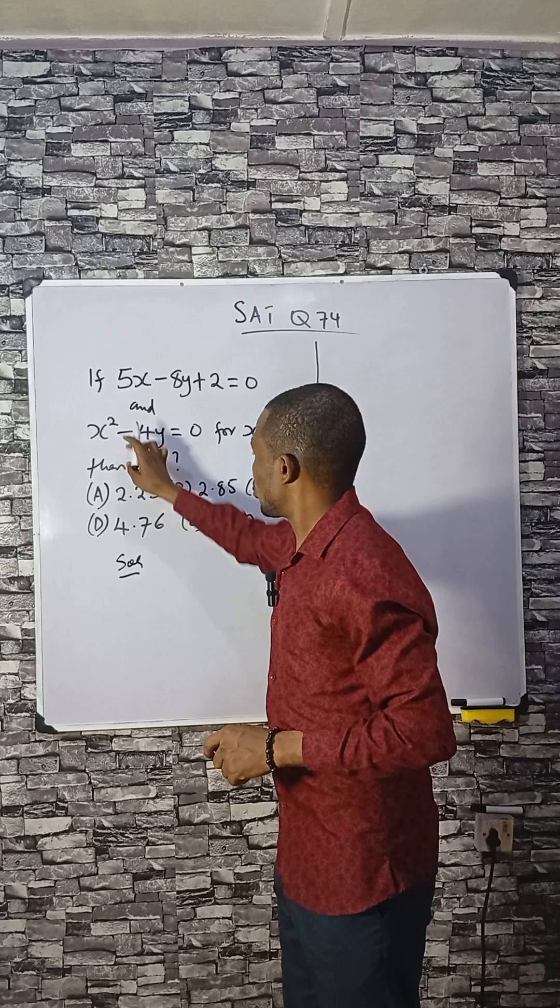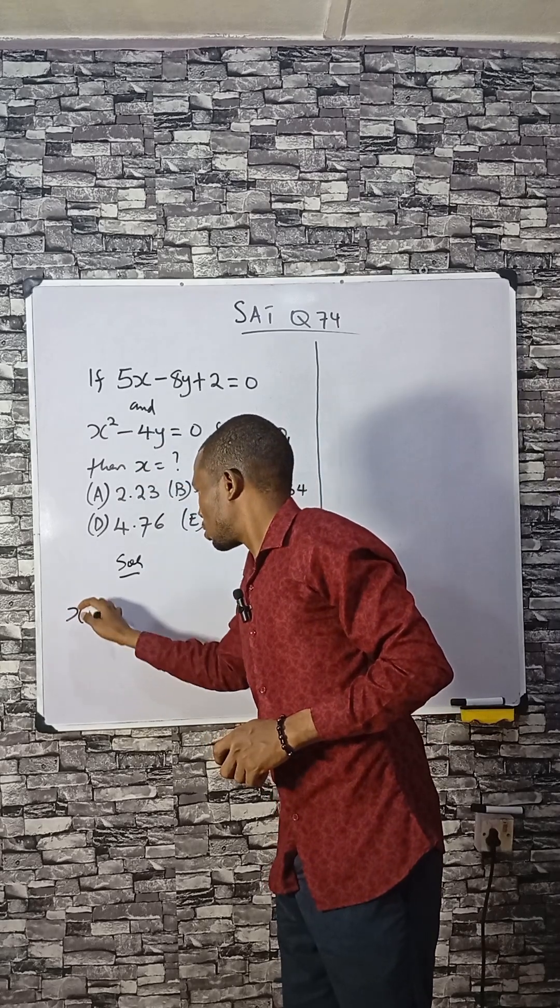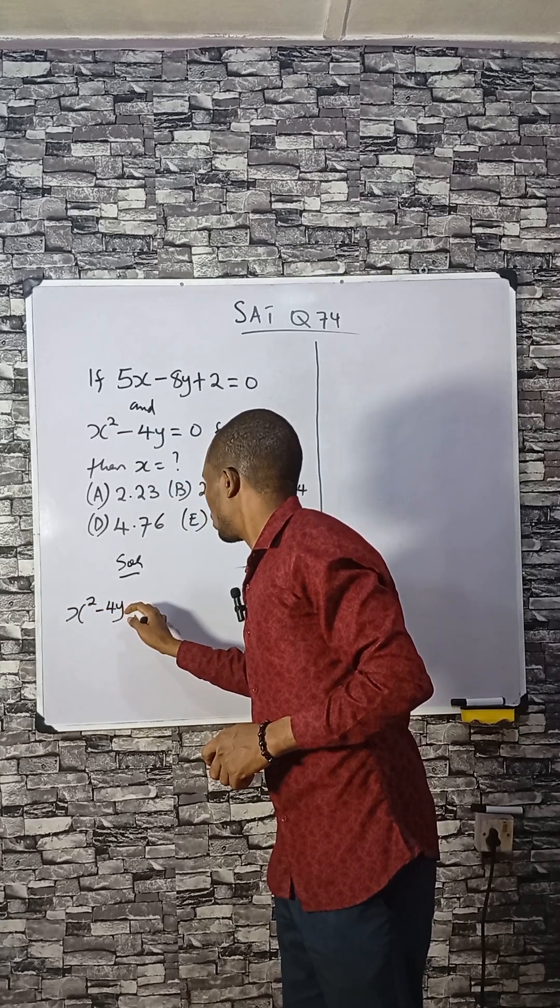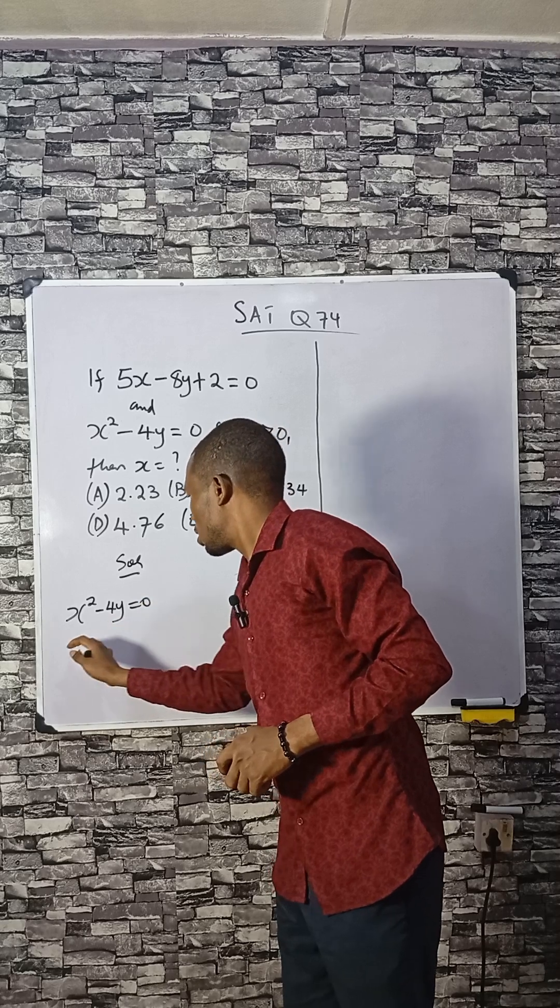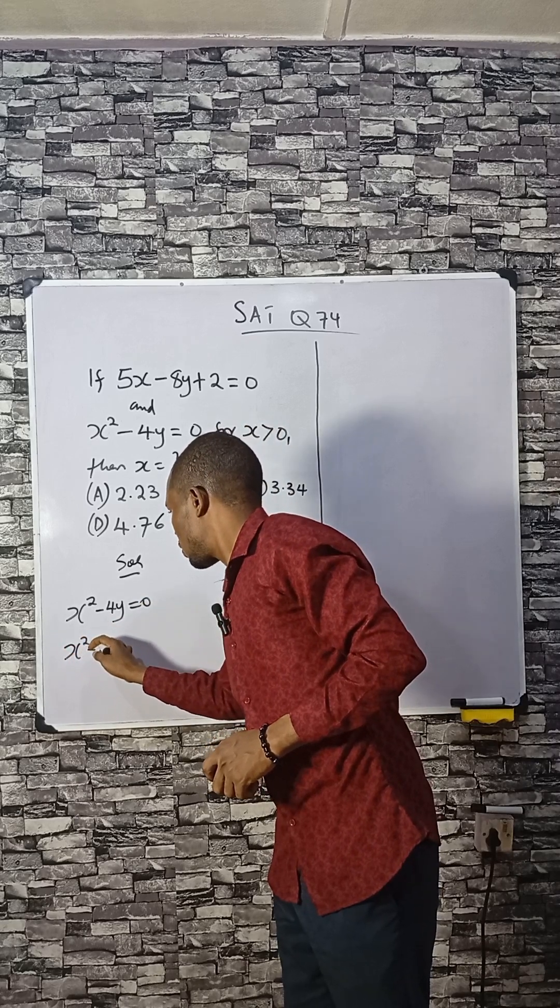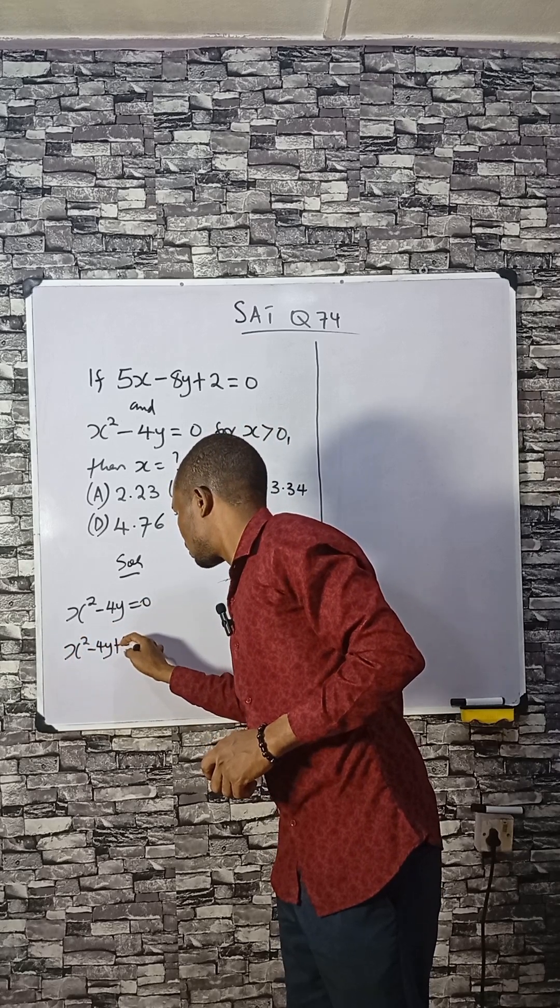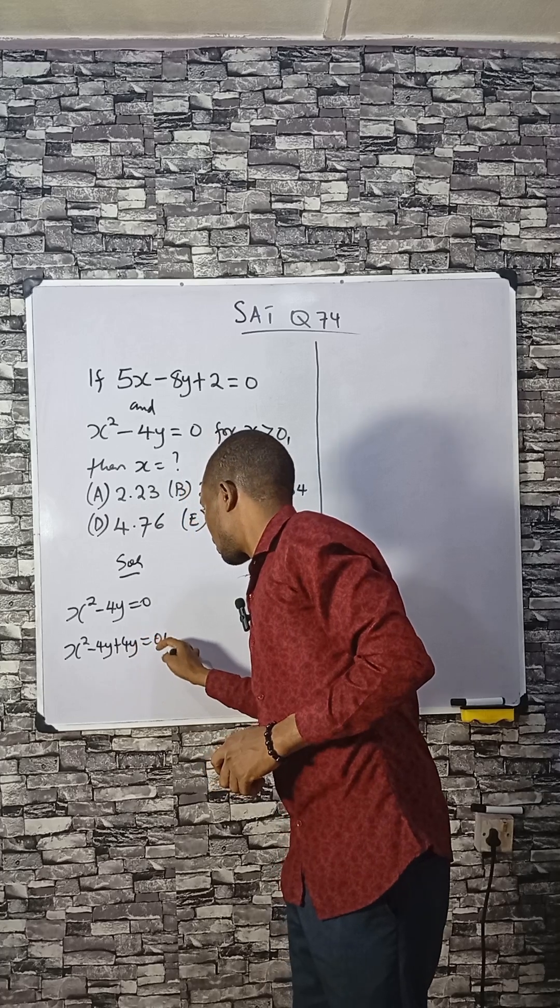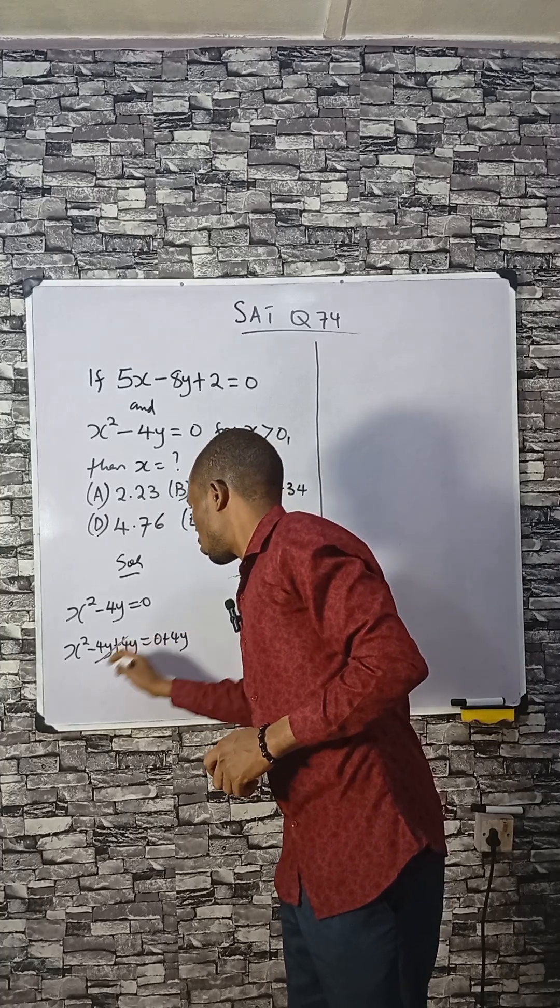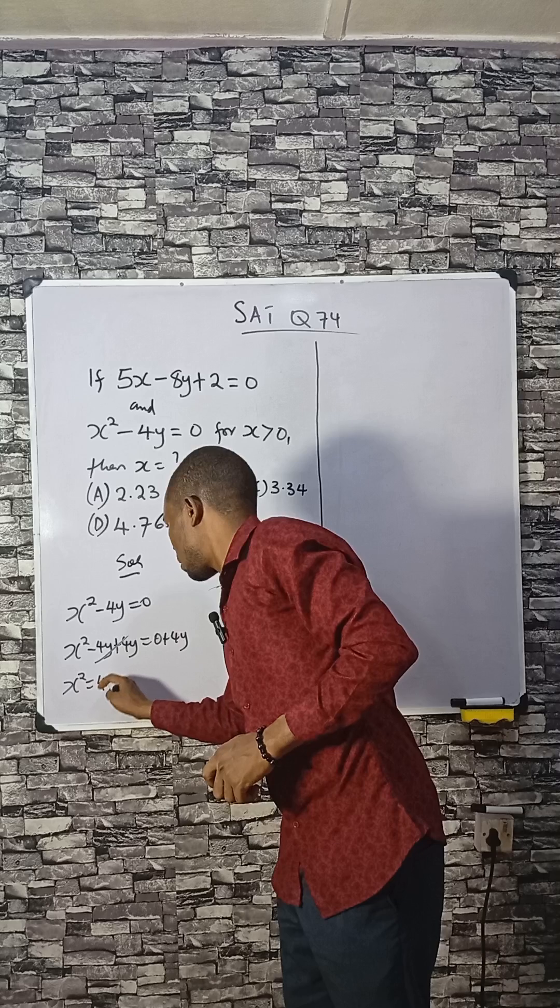Now consider the second equation first: x² - 4y = 0. If I add 4y to both sides, I have x² = 4y.